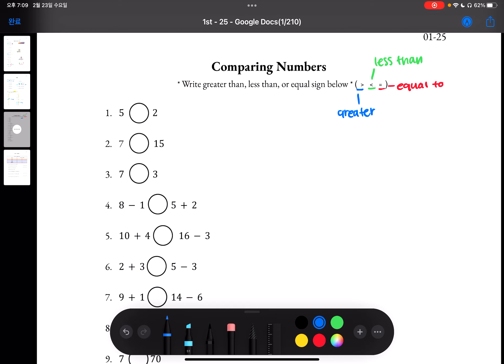For number 1, we have to compare 5 and 2. So when we count, we know that 2 comes before 5. It goes 1, 2, 3, 4, 5. And as we count, the numbers get greater. So we know that 5 is bigger than 2.